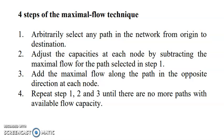There are four steps in solving the maximum flow technique. First, select any path in the network from origin to destination. Second, adjust the capacity at each node by subtracting the maximum flow selected in step one. Third, add the maximum flow along the path in the opposite direction. Then repeat all three steps until there are no more paths available.